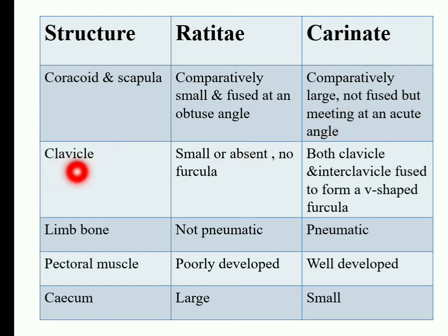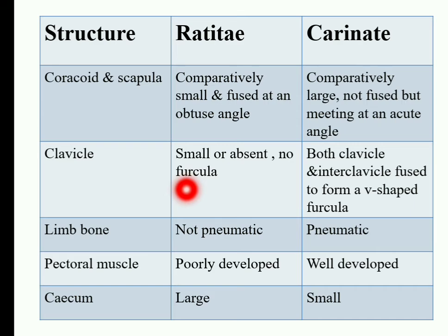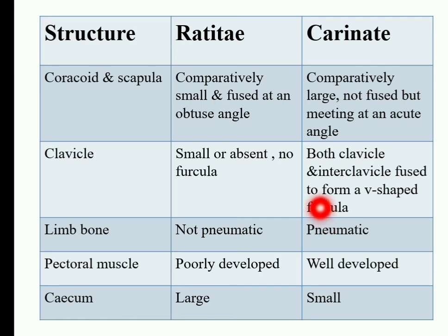Next are the clavicles. In Ratites birds, the furcula is small or absent, as the clavicles and interclavicles are not well developed. In Carinates birds, both the clavicle and interclavicle are fused to form a well-developed V-shaped furcula, which is present in the pectoral girdle.